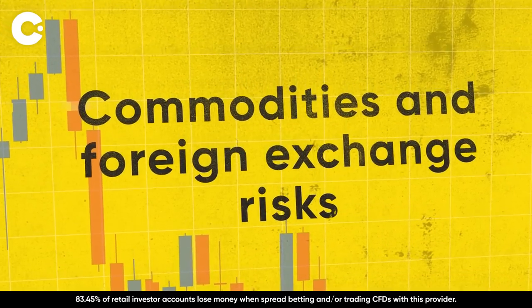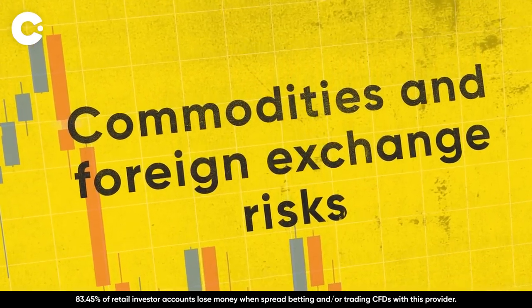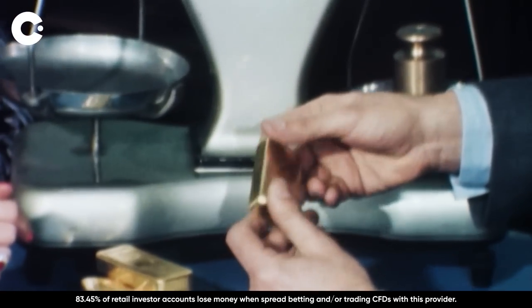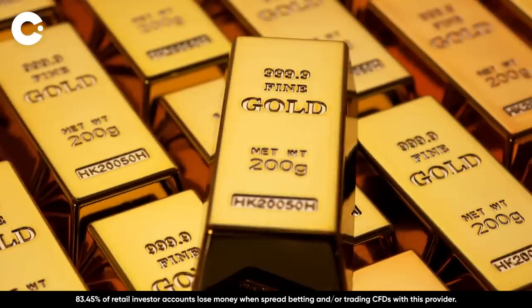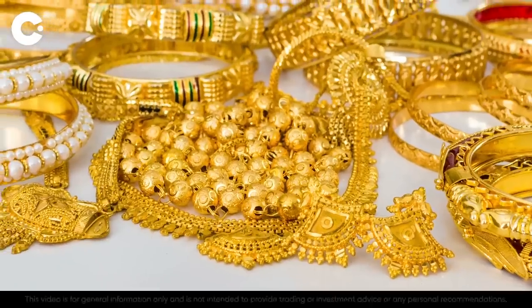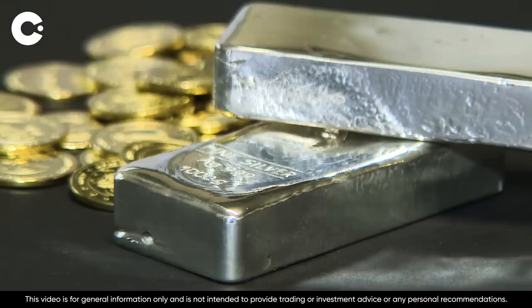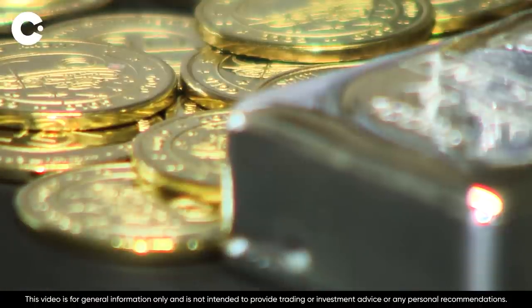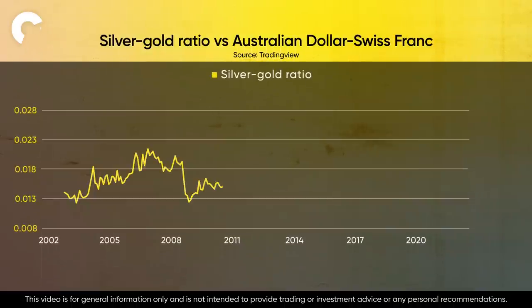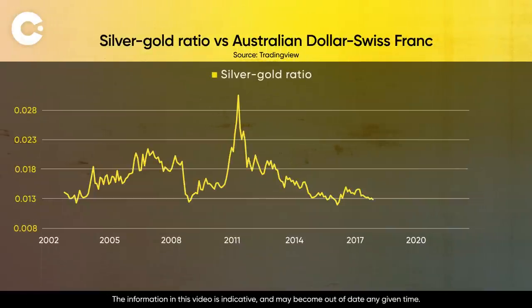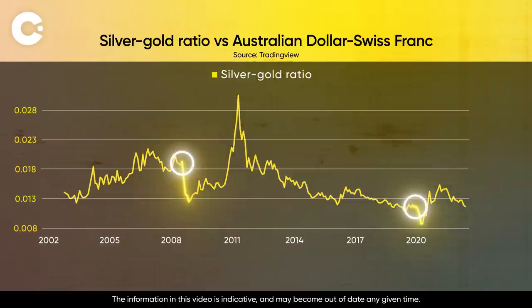When economic times get tough, investors have historically flocked to gold. Let's take a look at the relationship between the respective prices of silver and gold — known as the silver-to-gold ratio — which describes how many ounces of gold can be bought with one ounce of silver. This ratio can fall at the beginning of recessions when anxious investors seek out havens like gold. It happened during the pandemic of 2020 and in 2009 during the financial crash.